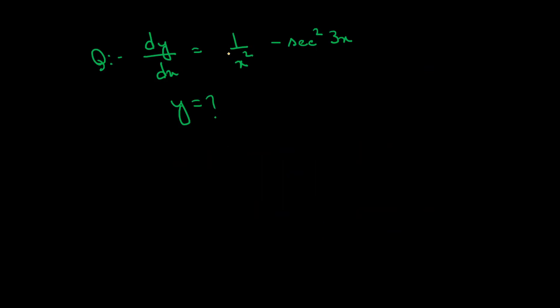dy by dx is 1 by x square minus c square times 3x. So y is integration of 1 by x square minus c square times 3x dx.